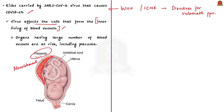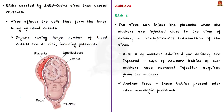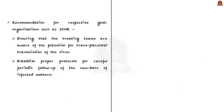According to the authors, it is clearly demonstrated that the virus can infect the placenta when the mother is infected close to the time of delivery — known as transplacental transmission. Data revealed that 8 to 10 percent of mothers admitted for delivery are infected, and around 1.4 percent of newborn babies of such mothers have neonatal infections acquired from their mothers. This means most newborn babies do not develop COVID-19 disease, but these babies have been found to present with rare neurologic problems. The authors urge that treating teams be aware of potential transplacental transmission and that proper protocols be established for careful periodic follow-ups of newborns of infected mothers, which could reduce mortality.